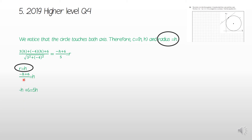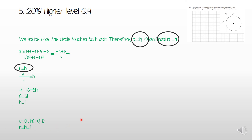Solving for h: multiply both sides by 5 to get −h + 6 = 5h. Add h to both sides: 6 = 6h. Divide both sides by 6: h = 1. So the center is (1, 1) and the radius is also 1.